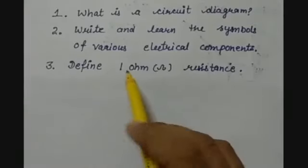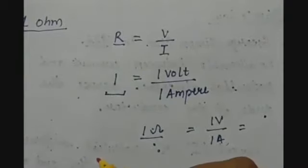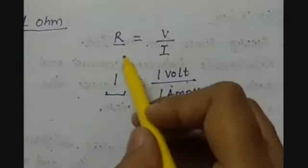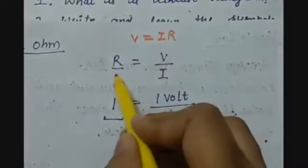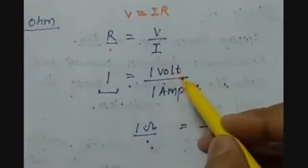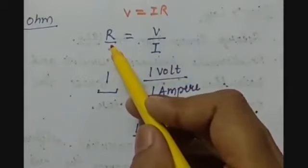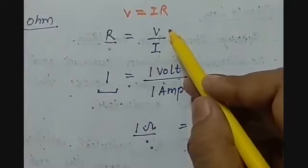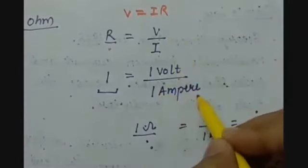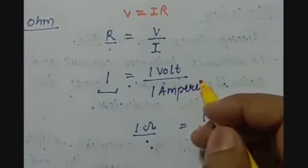Question number 3 is: Define one ohm resistance. You can define resistance of one ohm by writing first the Ohm's law equation V = IR, then finding out R, which is the ratio of potential difference to the current. The definition of one ohm resistance is: the resistance will be said to be one ohm if one volt potential difference is applied across the ends of the conductor and one ampere current flows through the conductor — then the resistance offered will be one ohm.